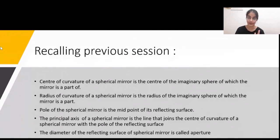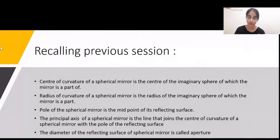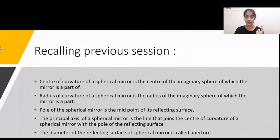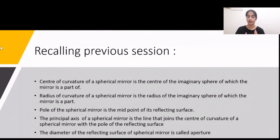Rays parallel to the principal axis after reflection usually meet or appear to be meeting. For convex mirrors, rays diverge and don't meet at a point, so we extend the rays towards the focus. The distance between the pole and focus of a spherical mirror is called the focal length, represented by small f.